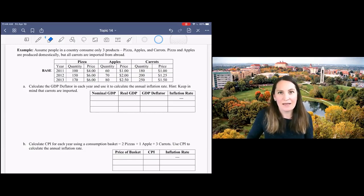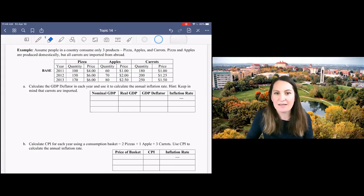In this video we're going to calculate the inflation rate using the GDP deflator method. In this example we have a country that produces three products: pizza, apples, and carrots. Notice that pizza and apples are produced domestically but carrots are imported.